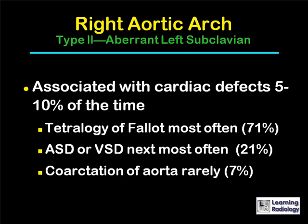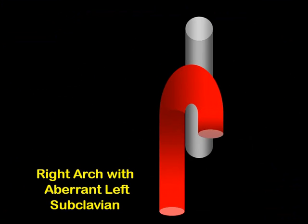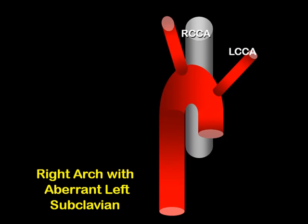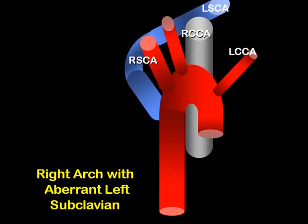A right aortic arch with an aberrant left subclavian is associated with cardiac defects about 5% to 10% of the time. Most commonly it too is tetralogy of Fallot, then atrial septal defect or ventricular septal defect, and coarctation of the aorta rarely. The branching: the first branch is the left common carotid artery, the second is the right common carotid artery, the third is the right subclavian artery, and then the aberrant left subclavian arises as the last branch off the right arch and passes posterior to both the trachea and the esophagus.